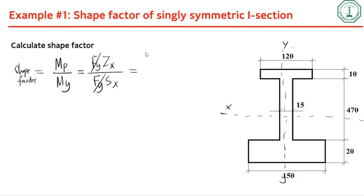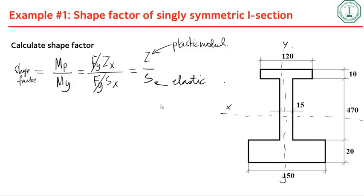When you simplify, what you get is the plastic section modulus Zx over the elastic section modulus Sx. The elastic section modulus is essentially Ix divided by y_max.